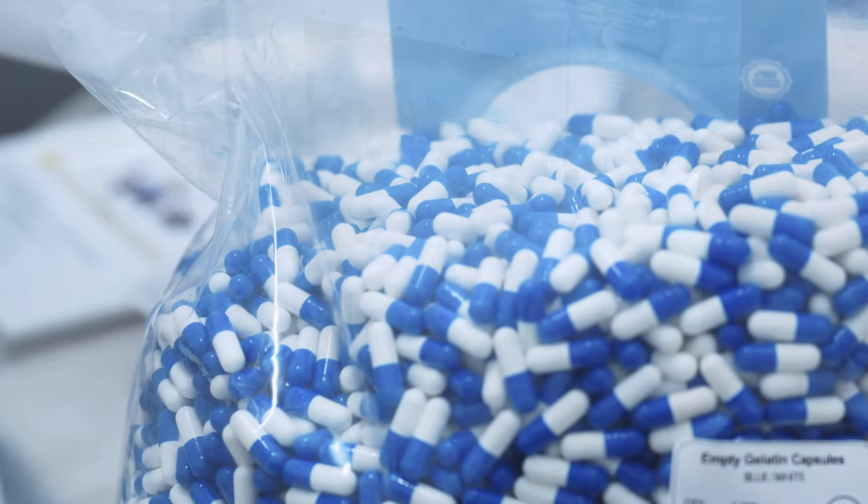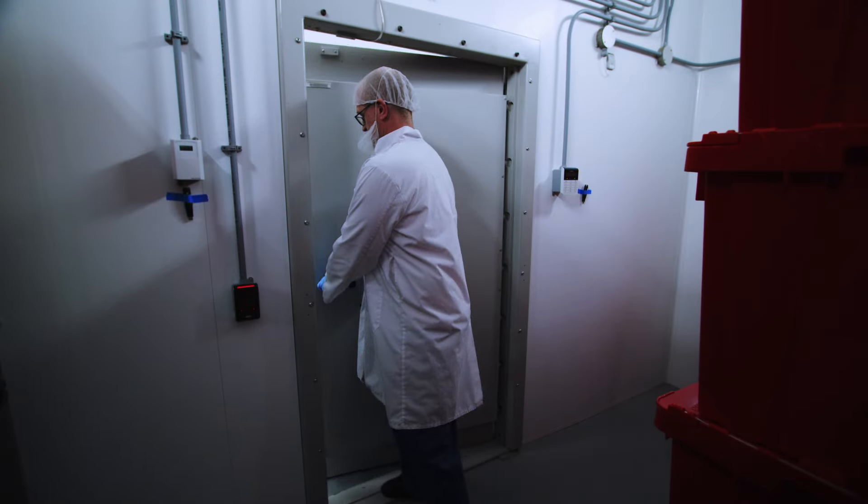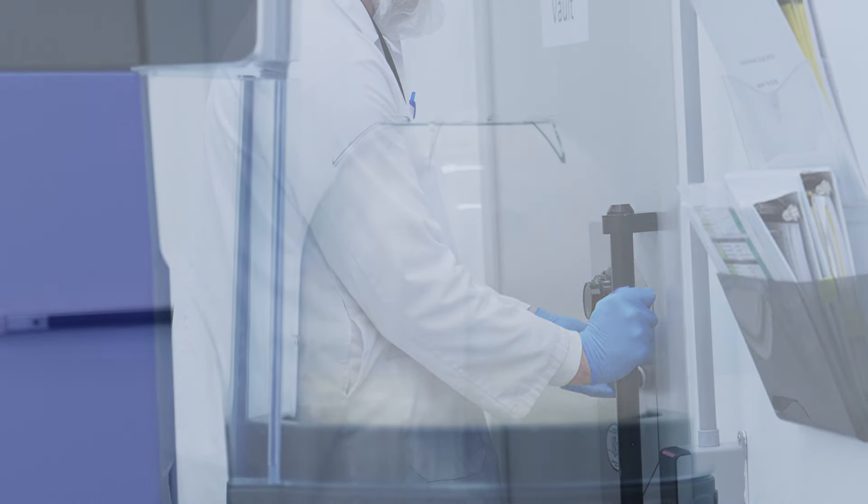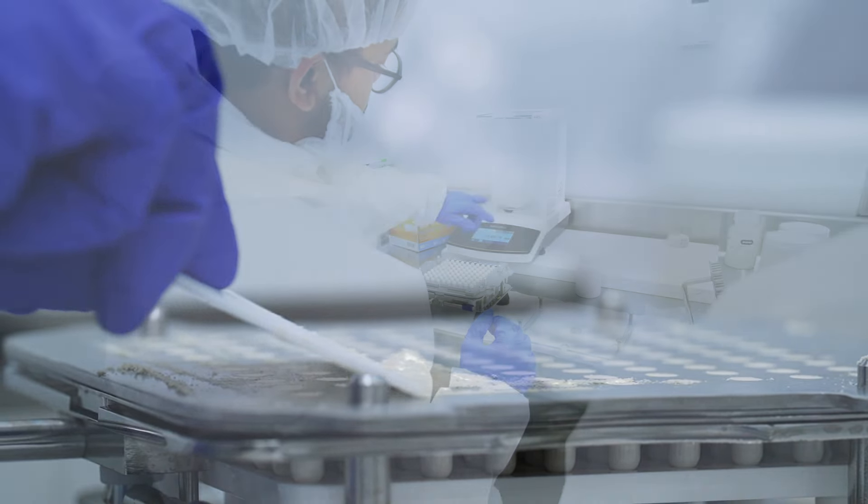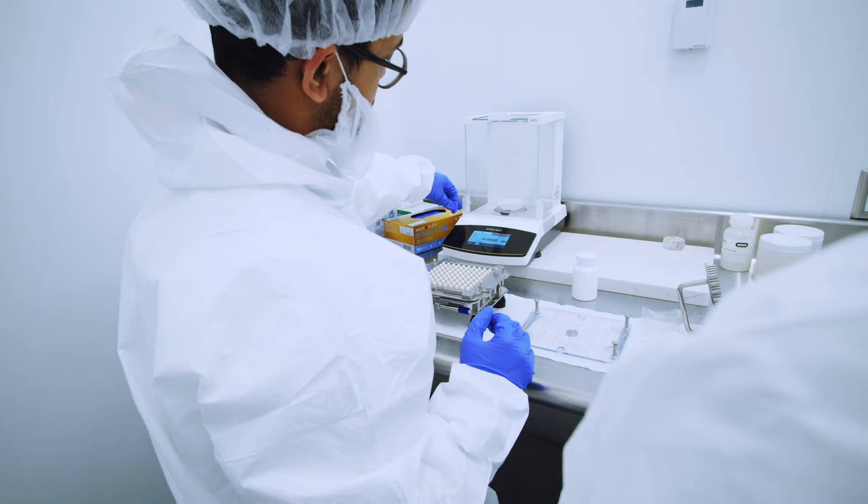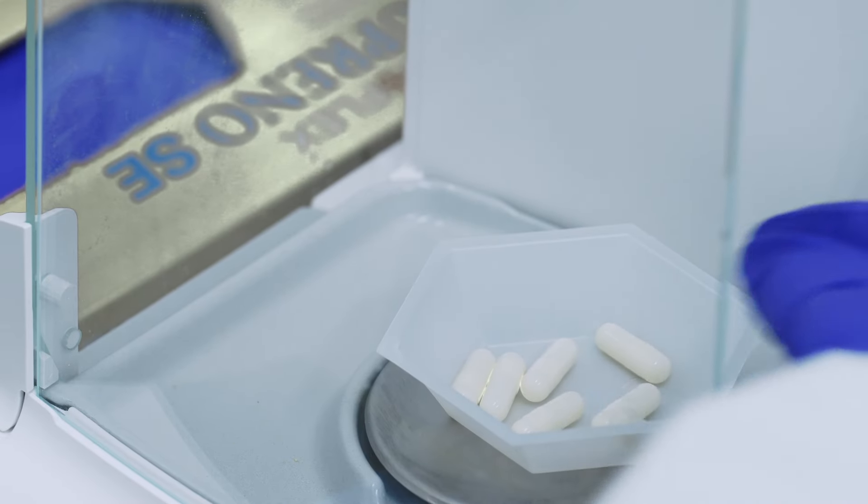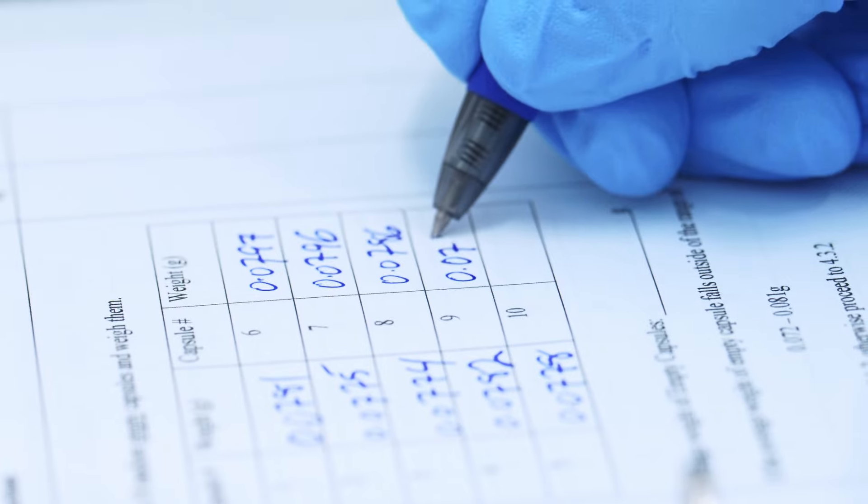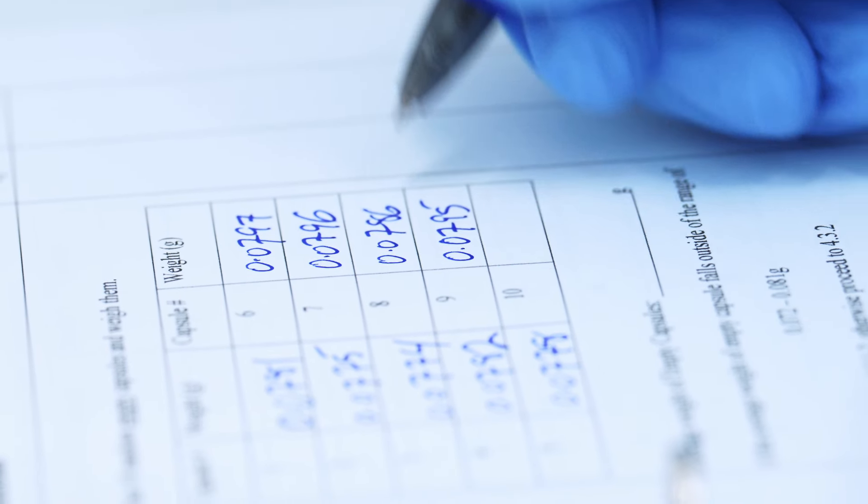That's the entirety of the encapsulation process, taking you right from the vault where we store all of our APIs, transport of the material, blending with excipients, making our blend homogenous, encapsulating, and then finally doing our quality control checks to ensure that each of the capsules is perfectly weighed so that the dosage is right and the quality is as high as we can get it.